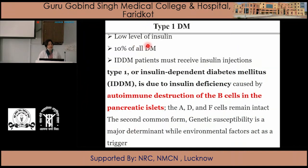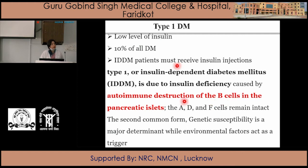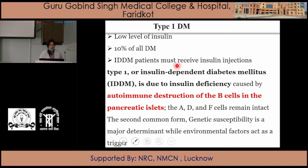In Type 1 diabetes mellitus, a low level of insulin occurs, and 10% of diabetes mellitus cases are of this type. In IDDM, patients receive insulin injections as treatment through the subcutaneous route of administration. This occurs because of the destruction of the beta cells of the pancreas by antibodies — autoimmune destruction of beta cells — leading to deficiency of insulin synthesis and secretion. Genetic susceptibility is a major determinant, while environmental factors also act as a trigger.